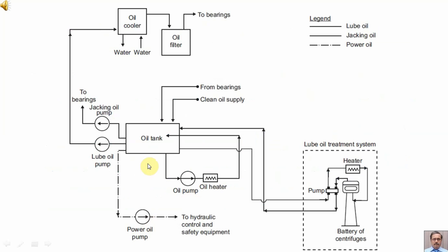This is the block diagram for the gas turbine lube oil system. In this diagram we can see the oil tank, lube oil pump, jacking oil pump, oil cooler, oil filter, oil heater, power oil pump, and lube oil treatment system containing a pump and battery of sentry fuses.